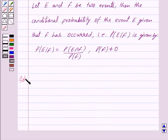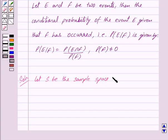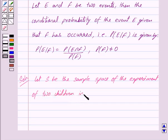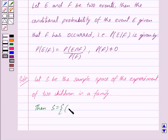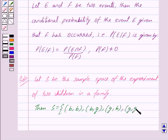Let us begin with the solution now. Let S be the sample space of the experiment of two children in a family. Then S consists of four outcomes: first is boy and second is boy; first is boy and second is girl; first is girl and second is boy; and first is girl and second is girl.